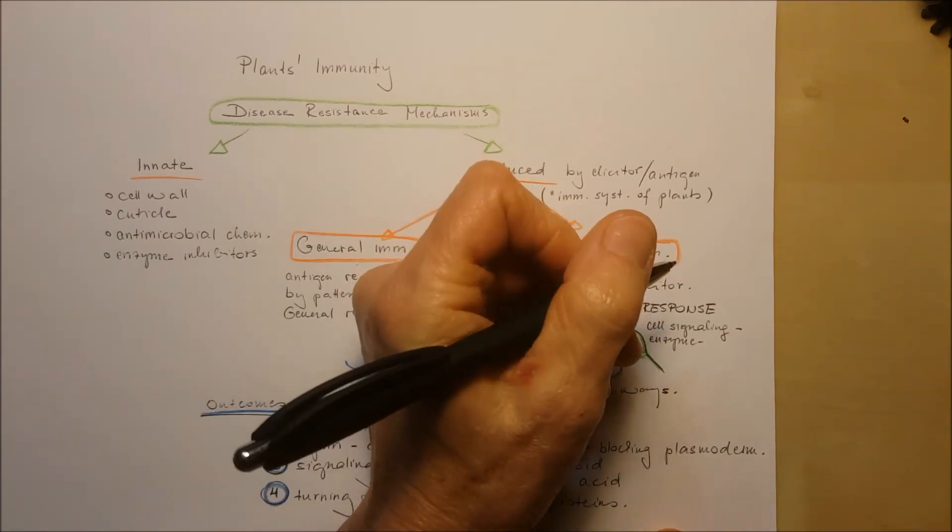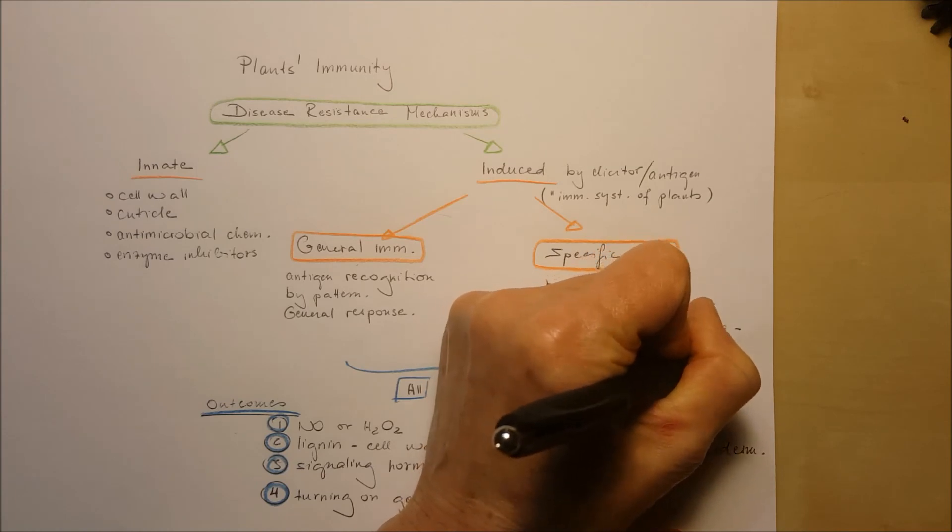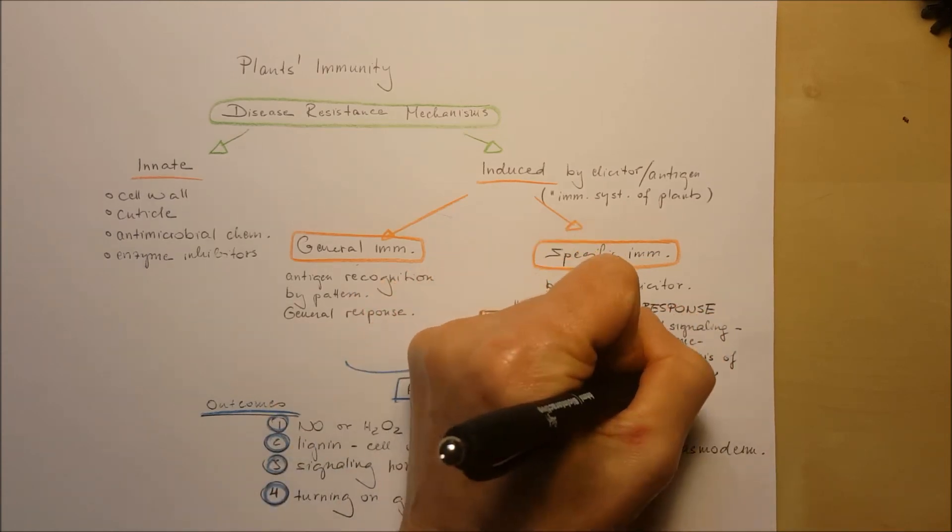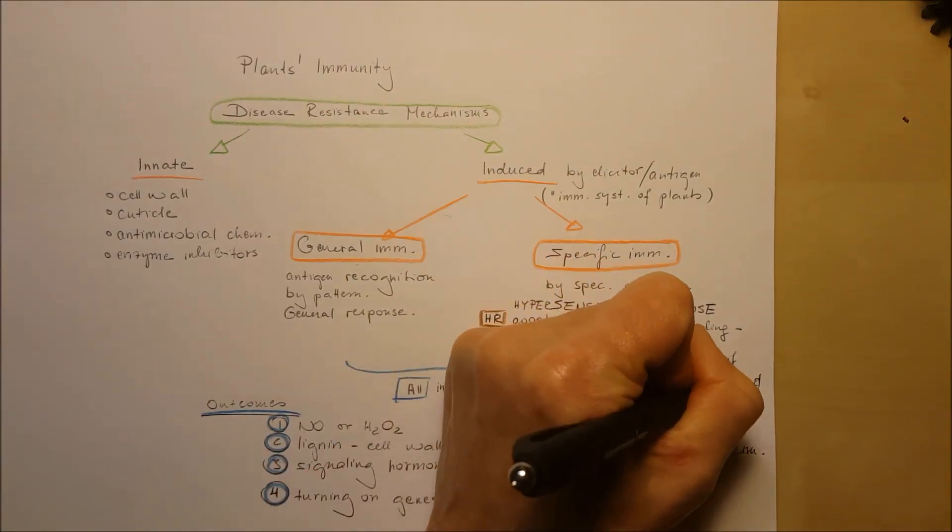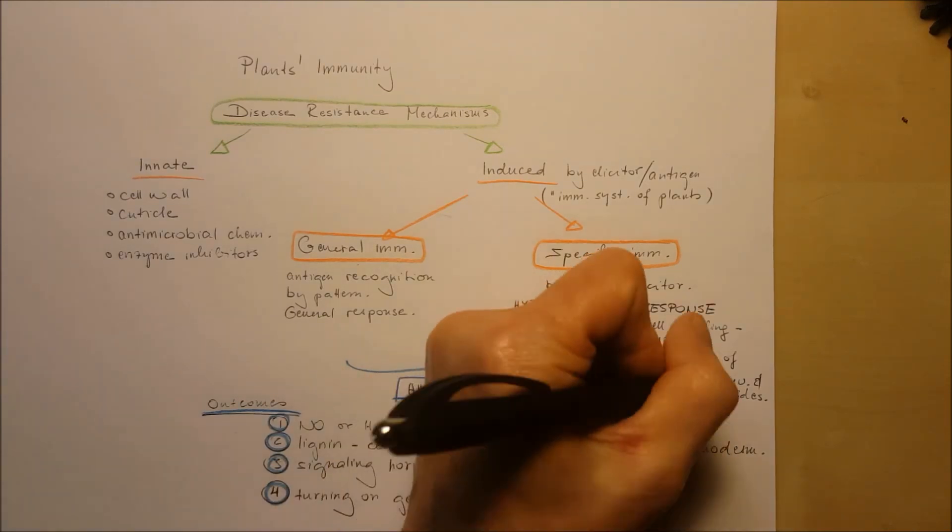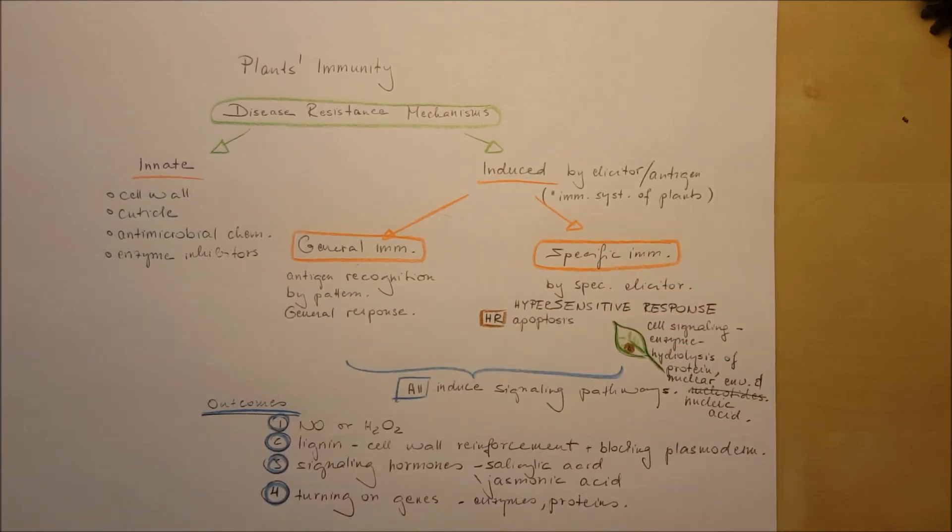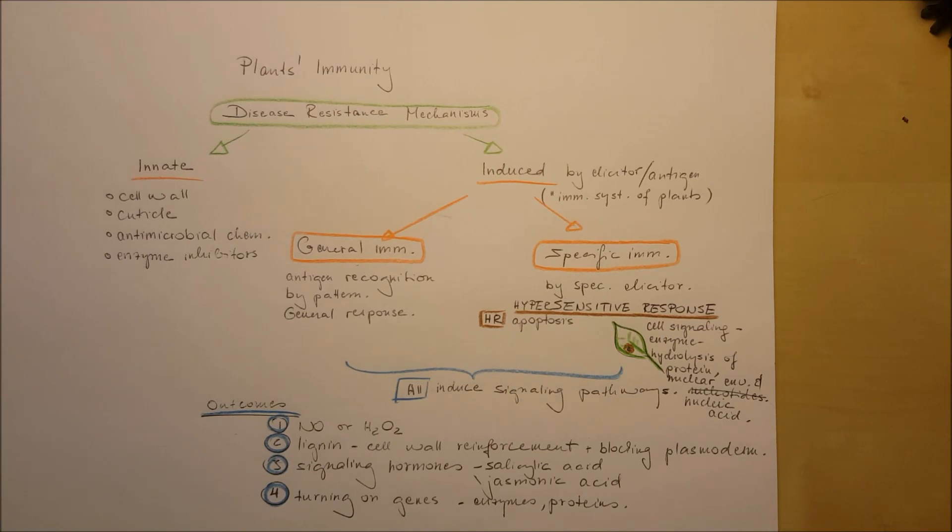Cell signaling activates enzymes, and a specific enzyme would hydrolyze proteins inside of the cells, nuclear envelopes as well as the nucleic acids. So the cells around the infection would die off too to stop the infection from spreading further in the plant. These are the brown spots usually found on cell leaves due to infection. Cell signaling is really important here too.